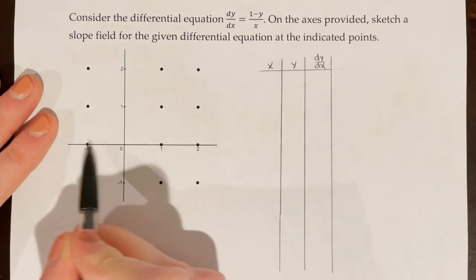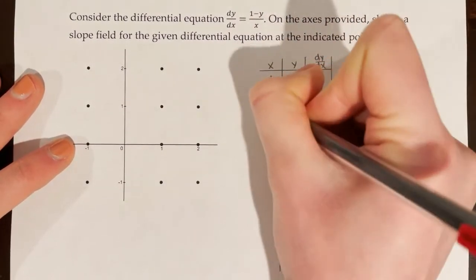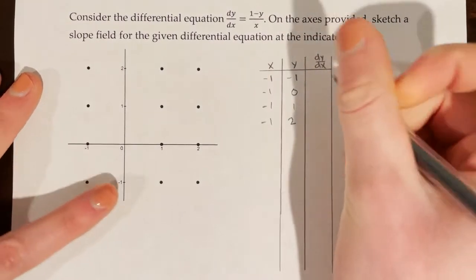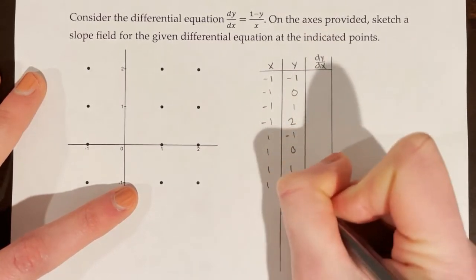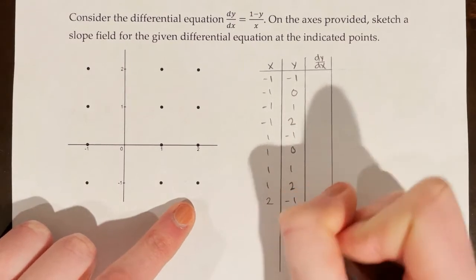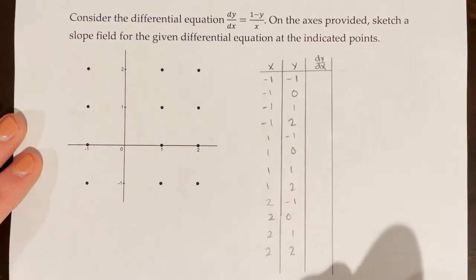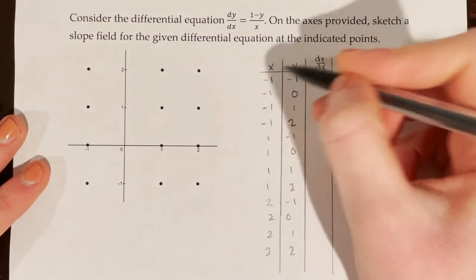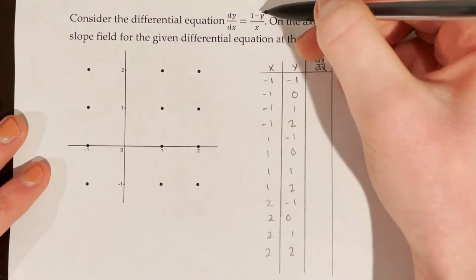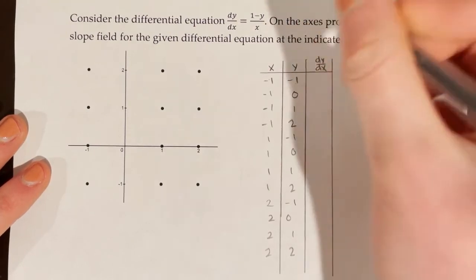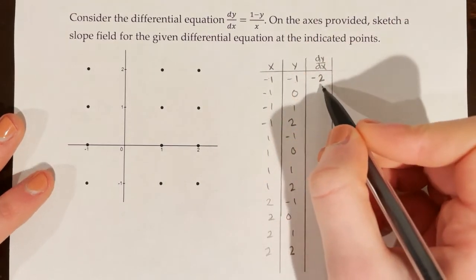The given points include: x = -1 with y = -1, 0, 1, 2; x = 1 with y = -1, 0, 1, 2; and x = 2 with y = -1, 0, 1, 2. Now we need to find dy/dx at each of these indicated points. At the point (-1, -1), plugging in gives (1 - (-1)) / (-1) = 2 / (-1) = -2. So when x = -1 and y = -1, dy/dx = -2.